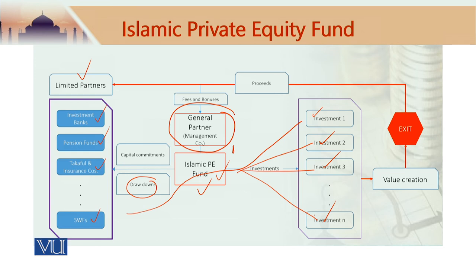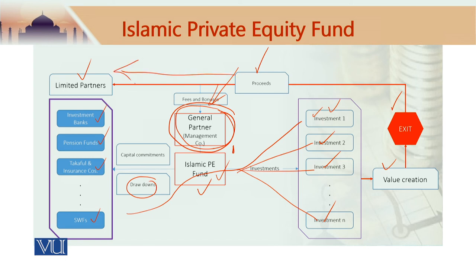These are direct investments based on profit-loss sharing. You are investing in and buying these projects. For example, this could be an electricity company — you buy the whole electricity company because you think you can improve its efficiency and profitability, and then sell it in the market to generate profit for the limited partners. Value creation is done by acquiring these investments, improving them, and then selling them. Once these investments are sold, the proceeds are divided: the general partner gets a share as part of their management fee, and the major bulk of the profits goes back to the limited partners.